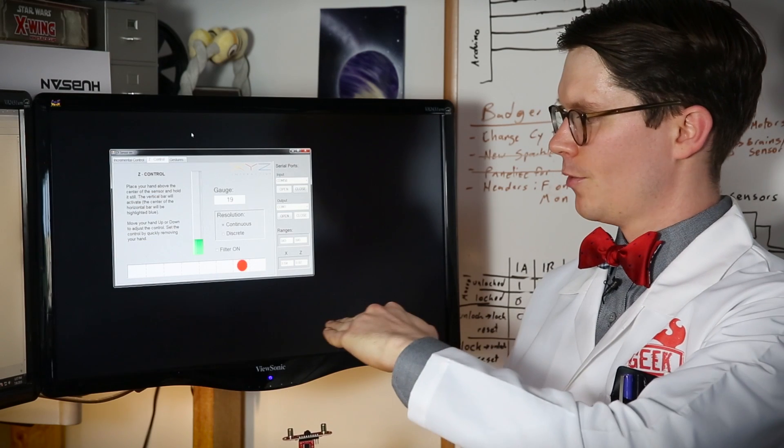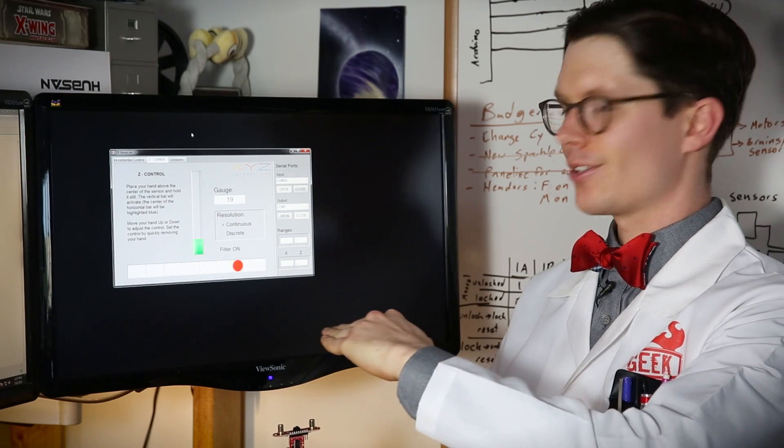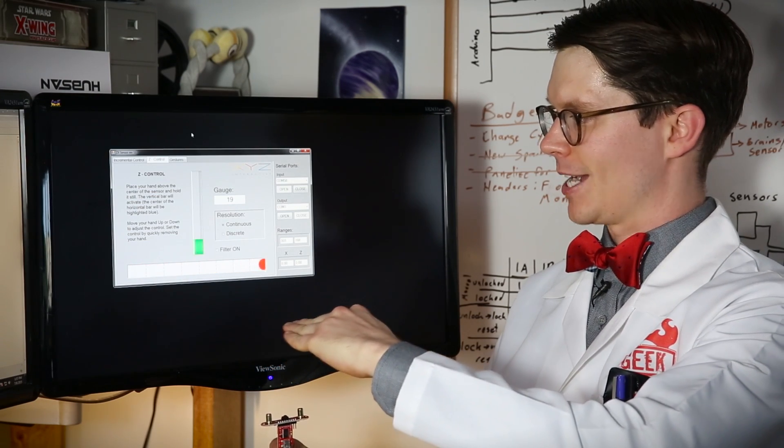For example, if I move my hand across the sensor, the little red ball moves back and forth and tracks my hand.